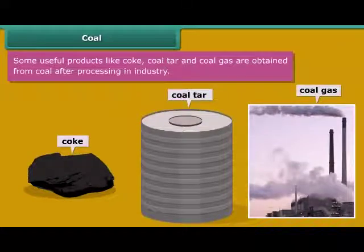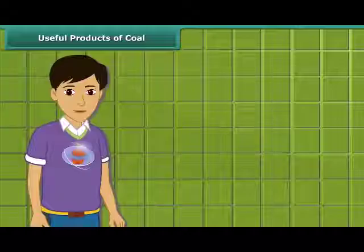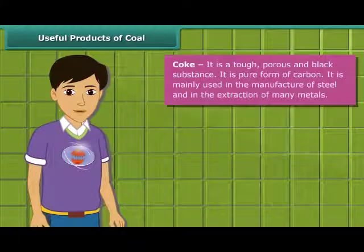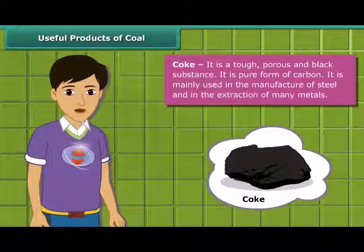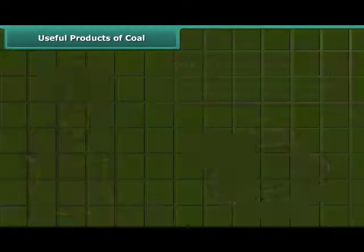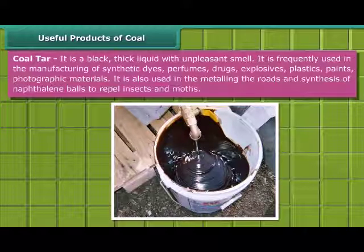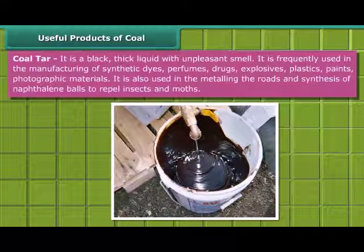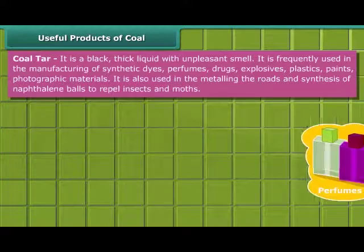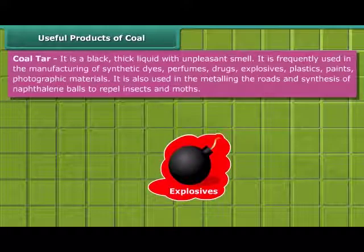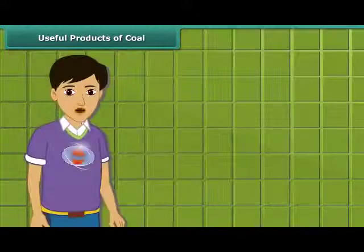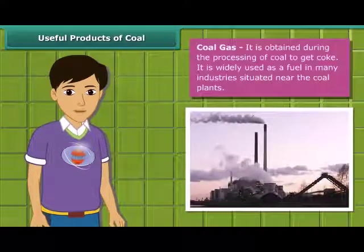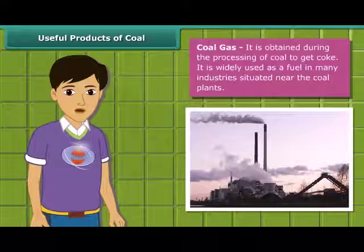Do you know how these byproducts are helpful for us? First, let us know about coke. Coke is a tough, porous, and black colored substance, mainly used in the manufacturing of steel and extraction of many metals. Coal tar is a black, thick liquid with an unpleasant smell; it is frequently used for manufacturing synthetic dyes, perfumes, drugs, explosives, paints, plastics, and photographic materials. To obtain coke from coal, coal gas is produced. In many industries located near coal plants, it is used as a fuel.